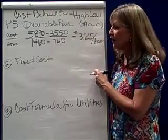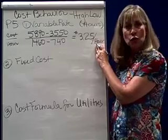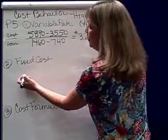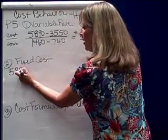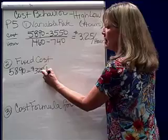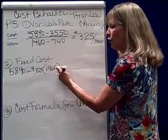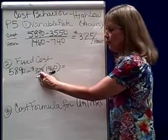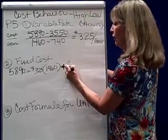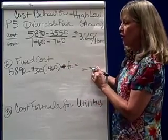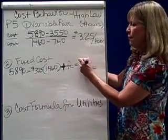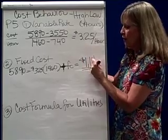Step two: find the fixed cost. We plug that $3.25 either into the high point or the low point. Using the high point: if my utility cost was $5,890, then $3.25 times 1,460 hours worked is the variable piece, and plus the fixed cost equals the total. Solving for fixed cost, I find it to be $1,145 a month.